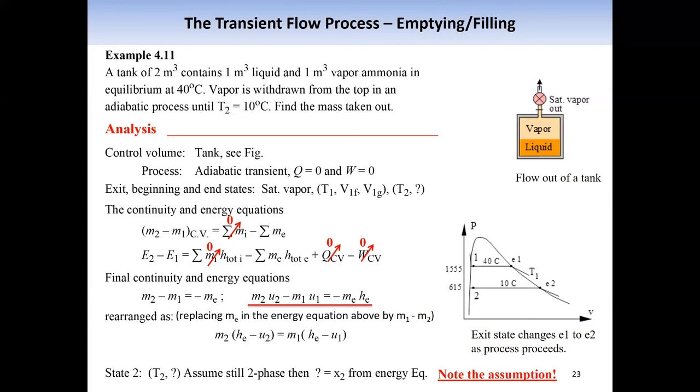we have ammonia inside a rigid container. The container is well insulated, so there is no heat transfer, and the ammonia is at the two-phase state. Each phase of the ammonia occupies half of the volume, the total volume is given, two cubic meters.